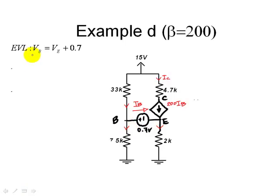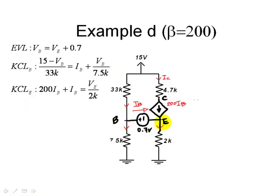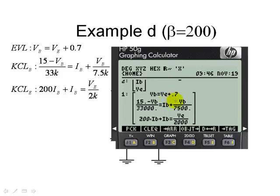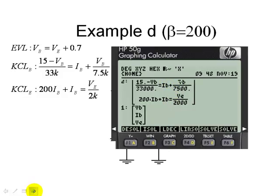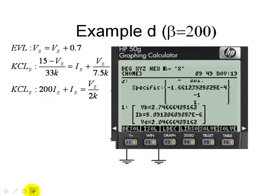We begin by writing the Evel equation on this branch, and then KCL for the base node, KCL for node E, the node of the emitter. We enter those equations in the calculator and ask for the base voltage, the emitter voltage, and most importantly, the base current.